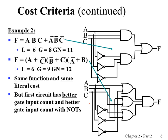Here is another example where two functions are identical. The first function is expressed as a product of sums, and the second is expressed as a sum of products of sums. We have physical implementations here and can calculate literal cost, gate input cost, and gate input cost with NOTs. Using criteria G or GN, we can see that the upper circuit is more optimized than the second one.